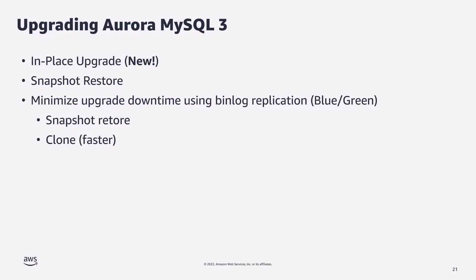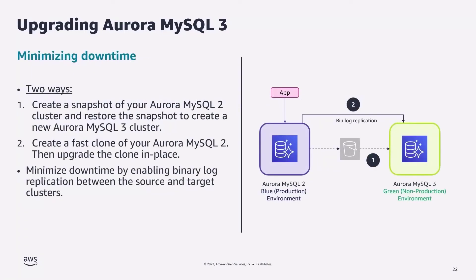If you were waiting to upgrade and wanted in-place upgrade support, you can use it now. Another option is snapshot restore — take a snapshot of your current Aurora MySQL 2 instance, and when you restore it, choose the Aurora MySQL 3 version. After restore you have an upgraded instance. Both of these options are fully managed, requiring just a few console clicks, though both will have some downtime since the instance is unavailable during upgrade. If you want to minimize downtime, you can use a blue-green method involving binary log replication.